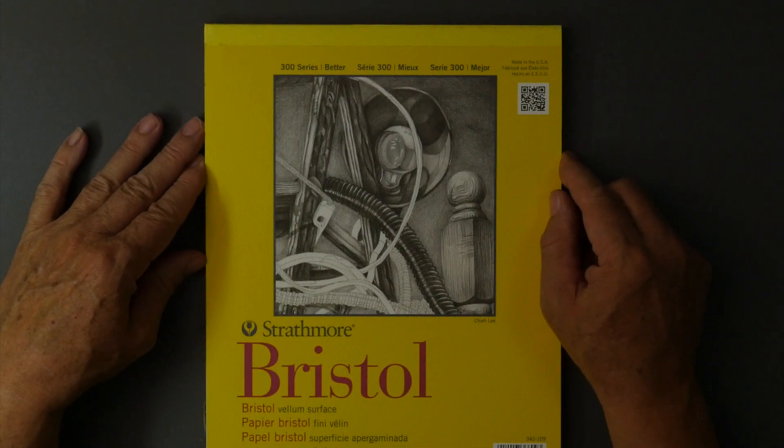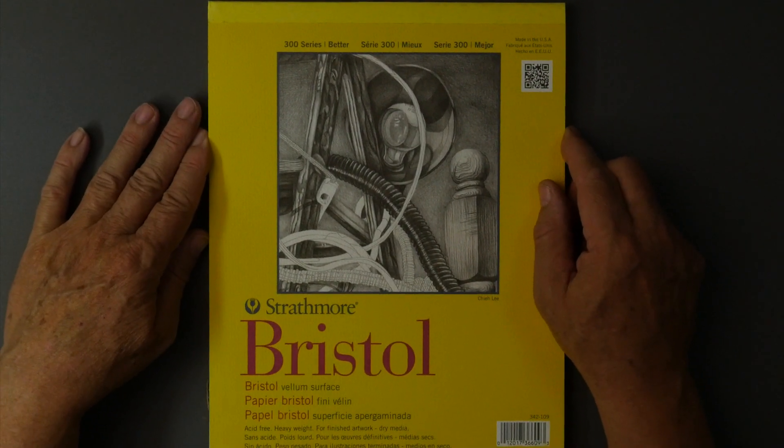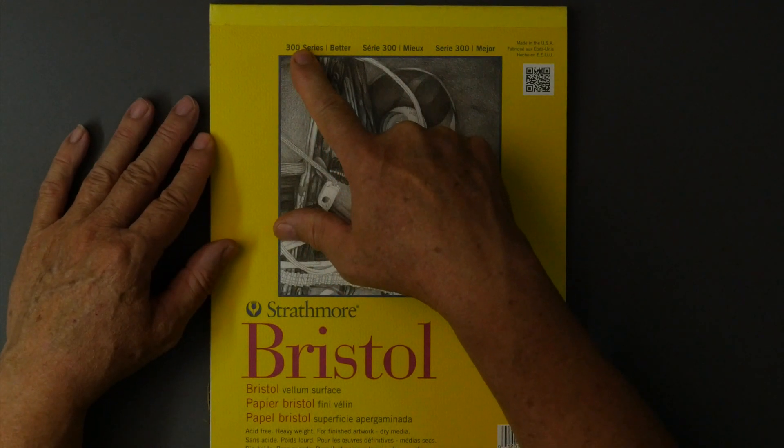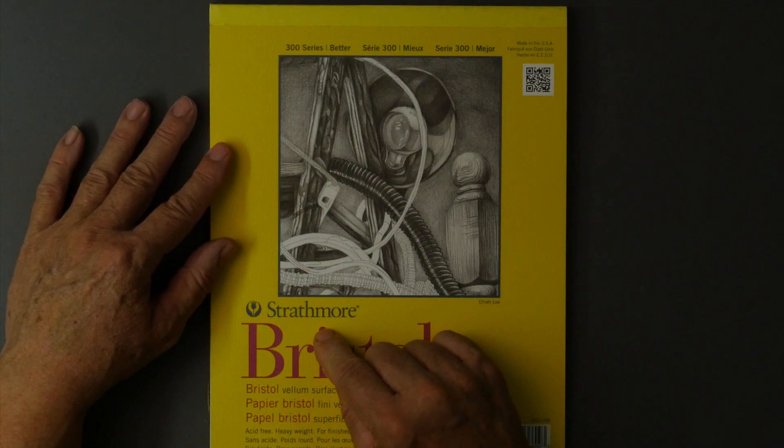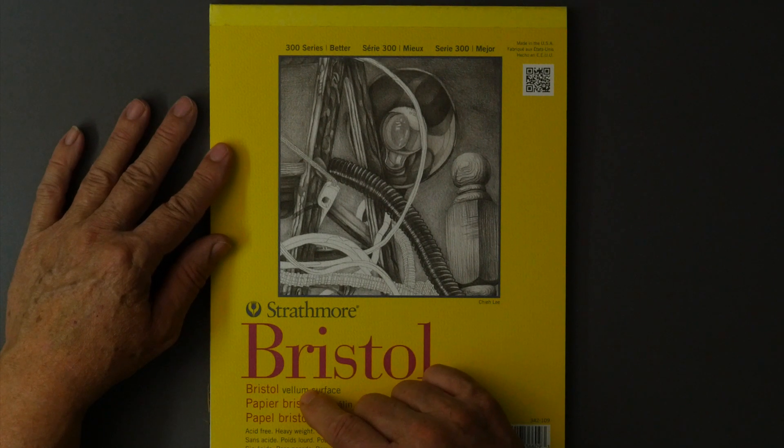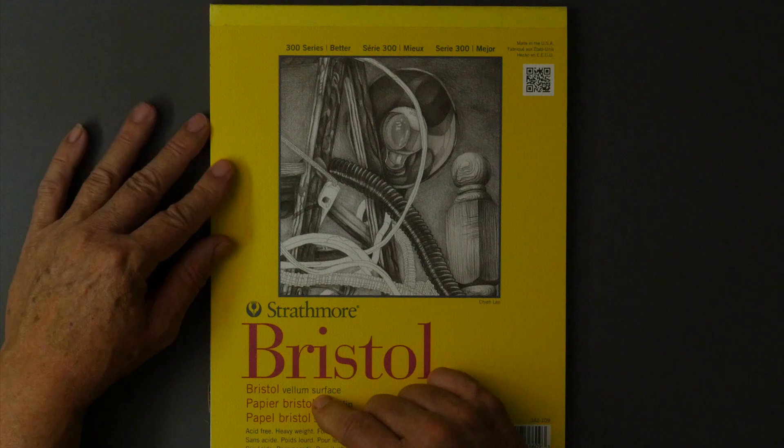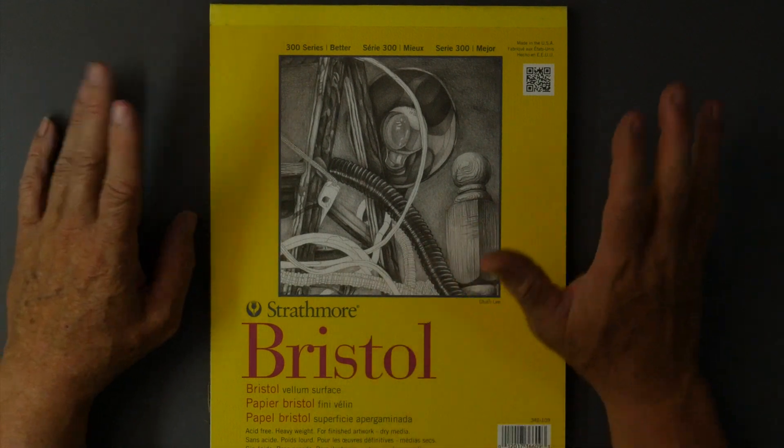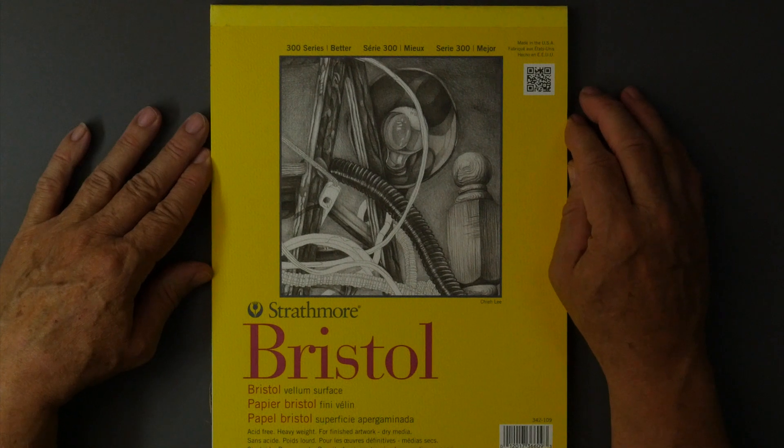Let's go ahead and see. I am drawing the major part of my drawings on Series 300 Strathmore Bristol vellum. The vellum is very important. It has more texture. They also have a smooth surface, and we don't want the smooth for this particular type of drawing that I'm working on.